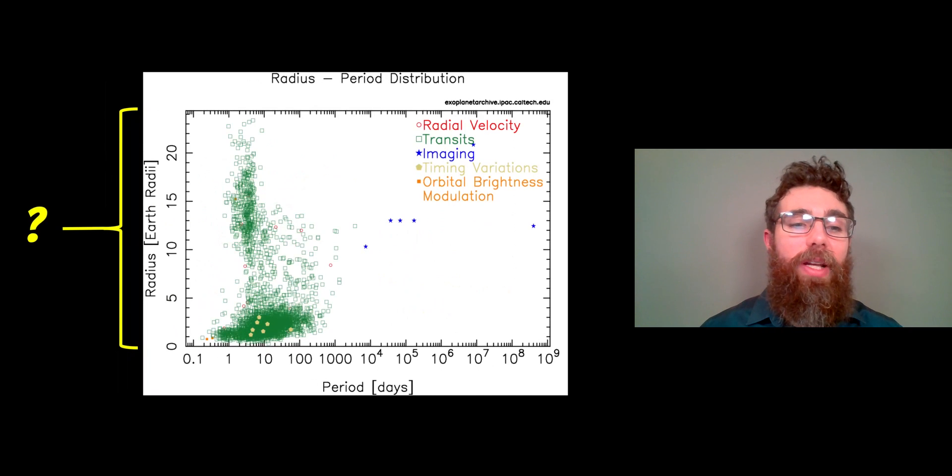Then we can do the orbital period against the radius of the actual exoplanet. But how do we actually get that radius? That's what we're going to have a look at in a minute. We've got the orbital period and then we have the radius.